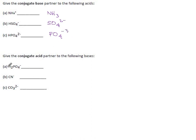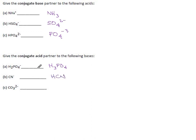And this is the opposite: these are bases — if they acquire a hydrogen to become their conjugate acid, what will they look like? We add a hydrogen: H2PO4⁻ becomes H3PO4, and the charge goes from minus 1 up to 0. Add a hydrogen here — charge goes from minus 1 to 0. And add a hydrogen here — charge goes from minus 2 up to minus 1.